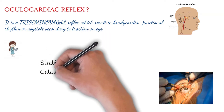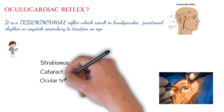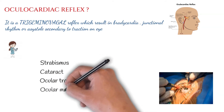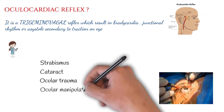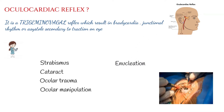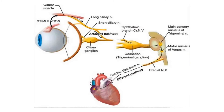It occurs in various eye surgeries such as strabismus and cataract surgeries, in patients with ocular trauma, and during ocular manipulation or in surgeries such as enucleation or evisceration. In all these kinds of surgeries, the oculocardiac reflex can be seen.